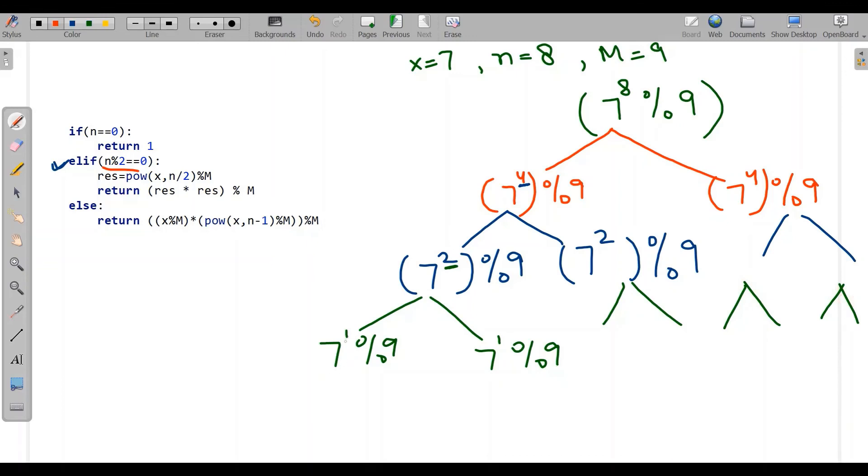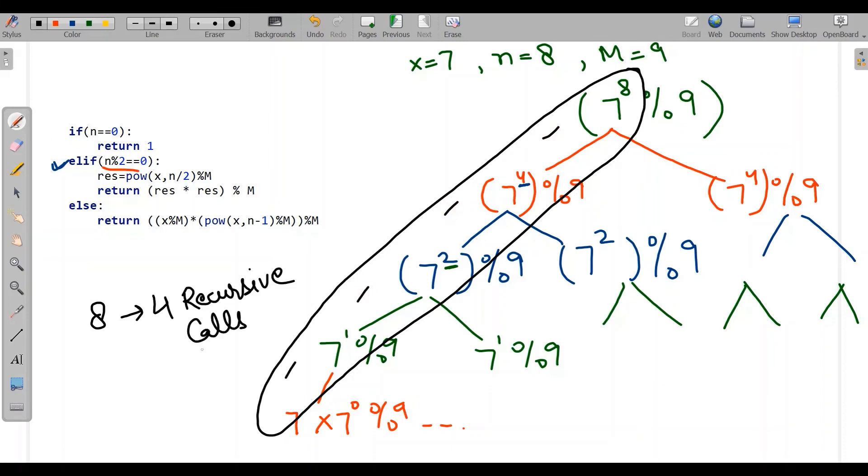Now 1 is odd. So here it will go to 7 into 7 to the power 0, then mod 9. So here you can see we have distributed the whole program into single calls. As it is 8, it will have just 4 recursive calls. So it will save our time and it will be order of log n.